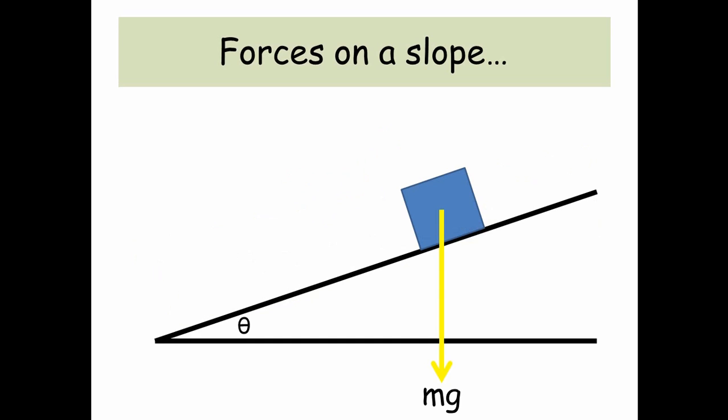Here we've got a blue box resting on a slope or a ramp and it's got a weight MG. Now some of the weight MG is going to act down the slope, so parallel with the slope, and some of it is going to act perpendicular to the slope. So there's our force acting parallel and the force going down the slope or parallel with the slope is MG sin theta, and the force acting perpendicular to the slope is MG cos theta.